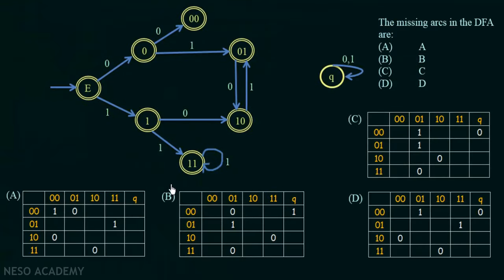We have four options A, B, C, and D as transition tables for the missing arcs. We have to find which is the correct transition table. One method is to look at the DFA and try all possible missing transitions, but that takes a lot of time. Since time is an important factor in an examination, we will try to solve this in the minimum possible time.